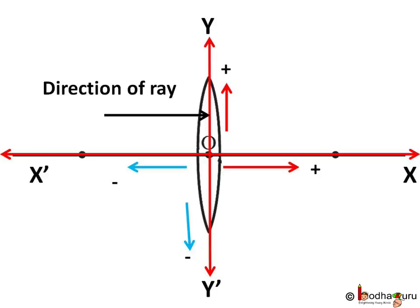All the distances measured in the direction of incident ray from optical center are positive. That is, from O to its right side is positive and the opposite direction is negative. It is easier to remember if you think of it as the same as XY coordinates concept of Cartesian graph.